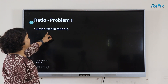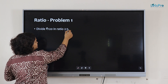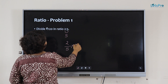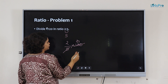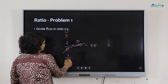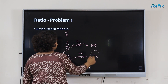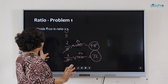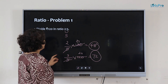First problem: divide 120 rupees in ratio 2 is to 3. The total is 2 plus 3 equals 5. So the first share is 2 divided by 5 into 120, giving 48. The second share is 3 divided by 5 into 120, giving 72. The final answers are 48 and 72. If you add these up, the total is 120 rupees. The ratio could be 3 to 4 as well, provided you divide by 7.